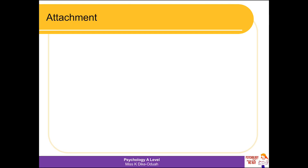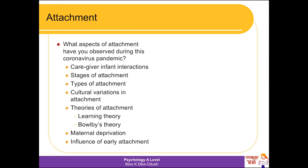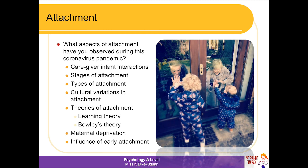We come on to the topic of attachment, covering caregiver-infant interactions, stages of attachment, types of attachment, and cultural variations. I've been able to make a link between the current situation and attachment theory. Consider grandparents interacting with their grandchildren through a glass door due to social distancing — many infants and children may be unable to form multiple attachments with grandparents, aunties, uncles, and cousins, which is the final stage in Schaffer and Emerson's stages of attachment theory.